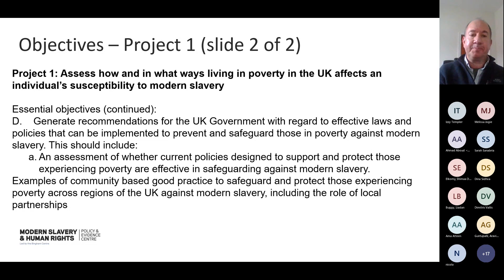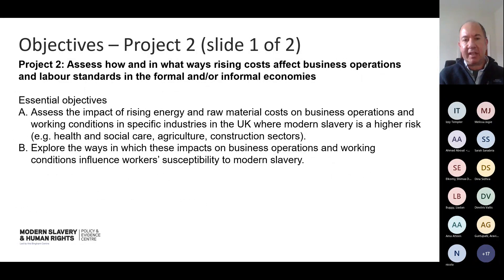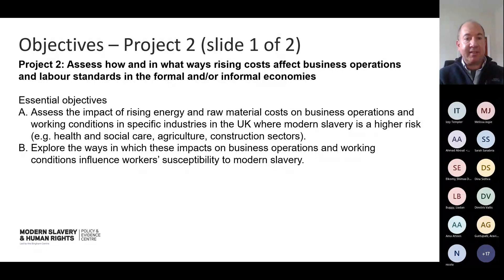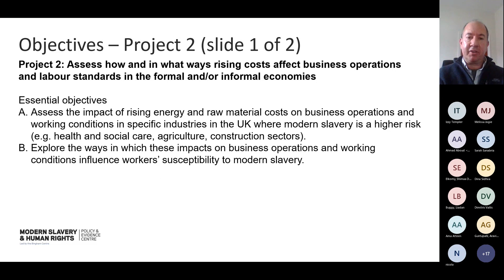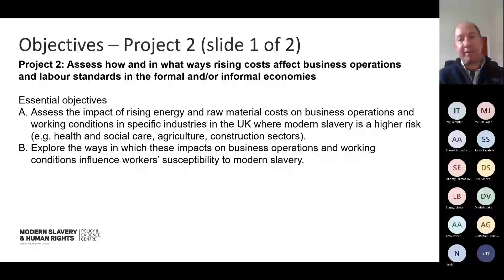For project two, which is about different sectors of the economy, we're interested in how business operations are affected and how labour standards might be deteriorating in informal or formal economies due to the rising cost of living. The essential objectives are to assess the impact of rising energy and raw material costs on businesses and how that might in turn affect working conditions in specific sectors of the UK economy — particularly areas where modern slavery is known to be high risk, such as health and social care, agriculture, and the construction sector. Has that been further exacerbated by poverty and the rising cost of living? And explore how those impacts on business operations and working conditions in turn influence risks to modern slavery.